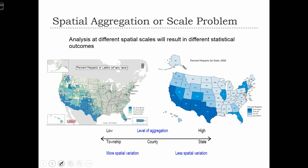Another issue with aggregation is the scale problem. The modifiable areal unit problem is composed of two things: the scale problem and the zoning problem. The zoning problem has to do with how zones inside a study area are arranged, while the scale problem has to do with the level of aggregation of the zones. Here we are looking at the same data displayed at two different levels of aggregation. On the left-hand side, we have the percentage of the population who are Hispanic displayed in a choropleth map at the county level of aggregation.